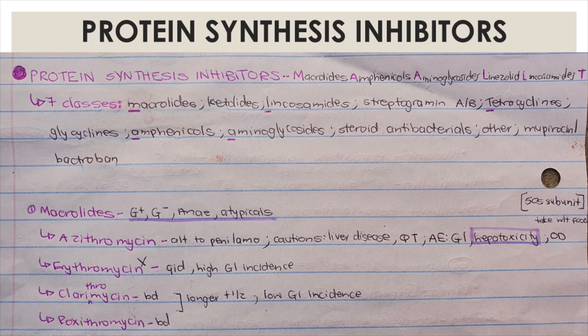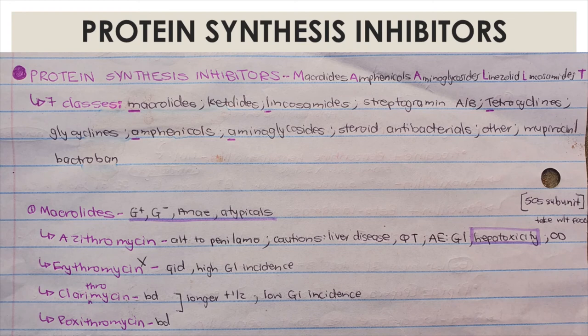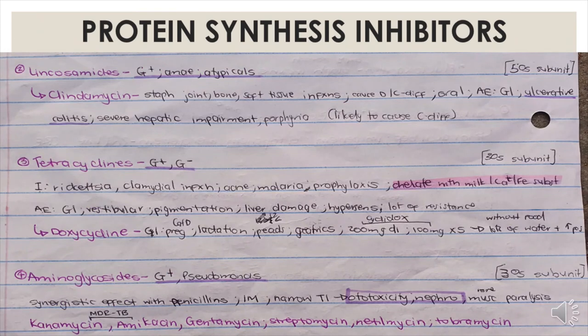Lincosamides cover gram positive, anaerobes, and atypicals. The example is clindamycin, used in Staphylococcus joint, bone, tissue, and soft tissue infections. It causes C. diff and is given orally. Adverse effects include GI effects, ulcerative colitis, severe hepatic impairment, and porphyria — a skin issue. Avoid giving this especially to older patients due to the range of adverse effects.